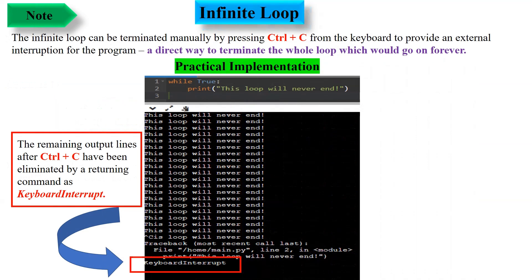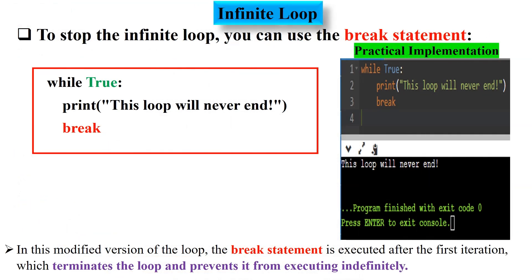The infinite loop can be terminated manually by pressing Ctrl+C from the keyboard to provide an external interruption for the program. To stop the infinite loop with Python code, you can use the break statement. For example, `while True: print('this loop will never end'); break`. In this modified version, the break statement is executed after the first iteration, which terminates the loop and prevents it from executing indefinitely.